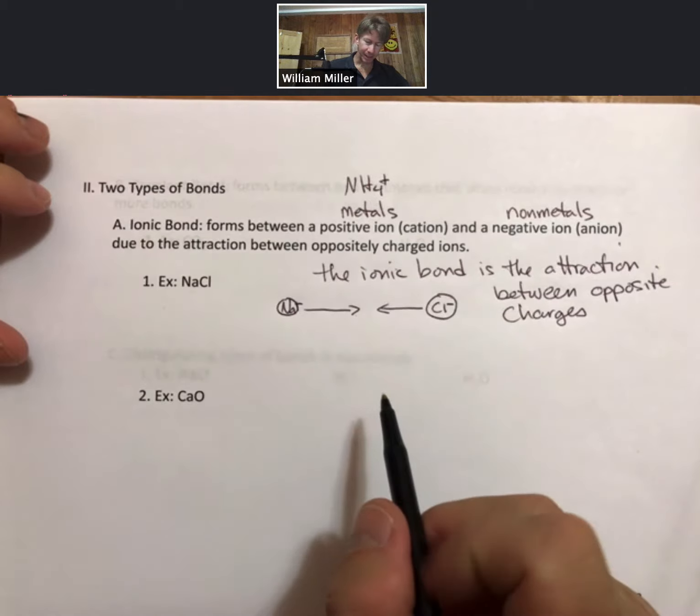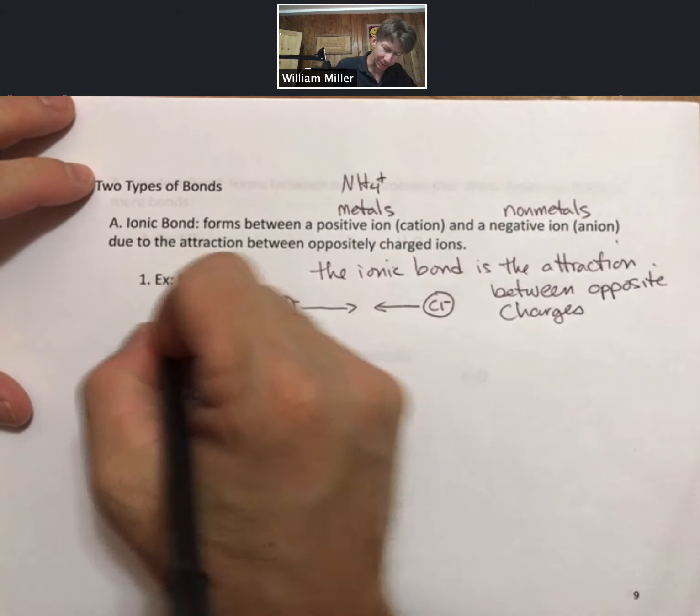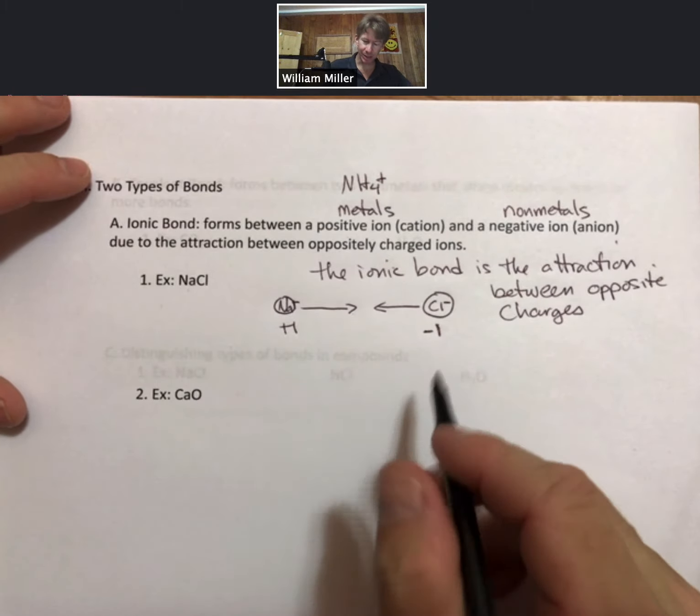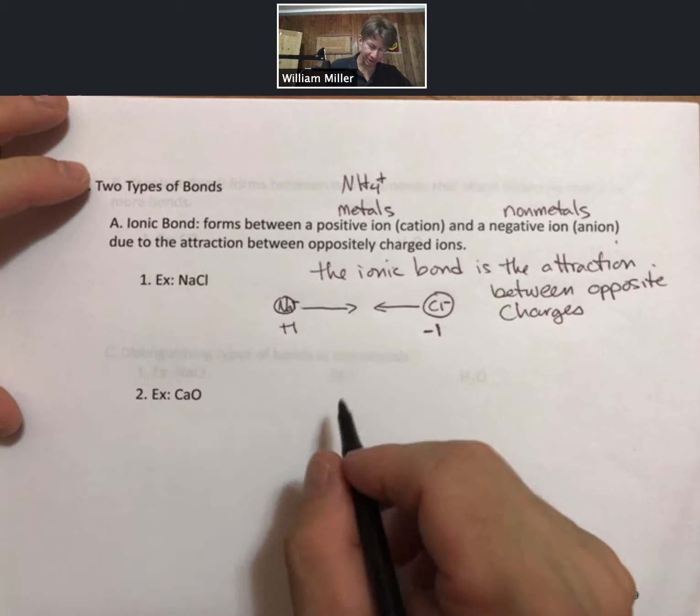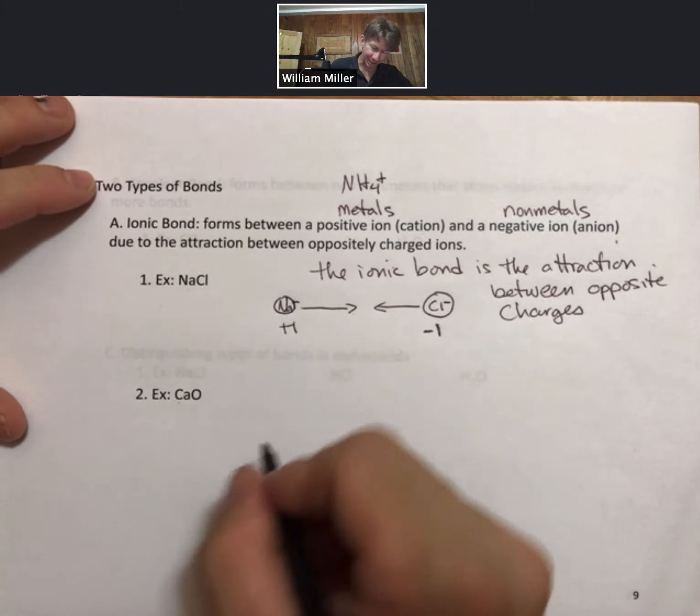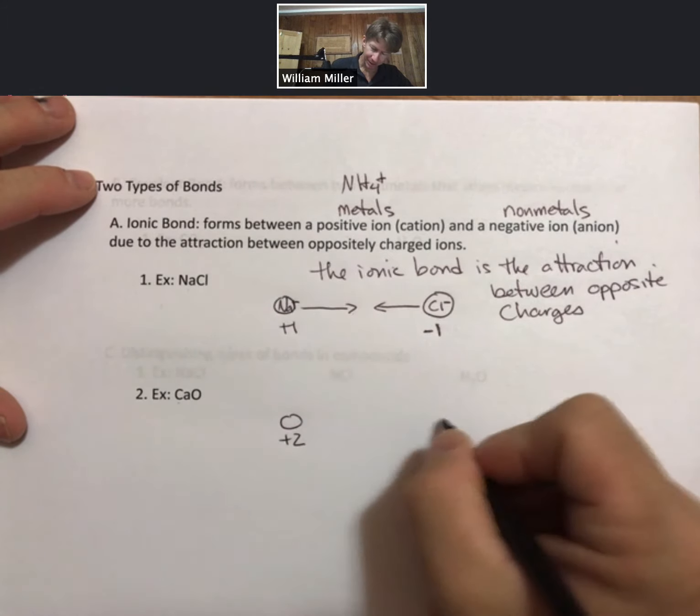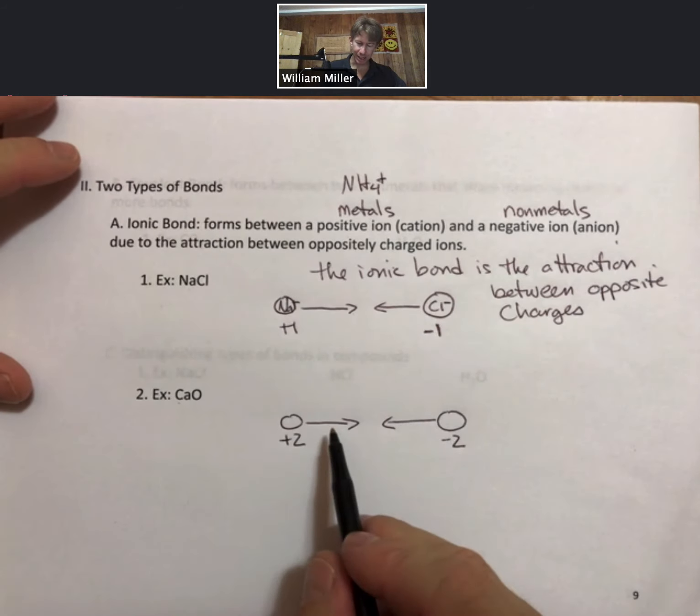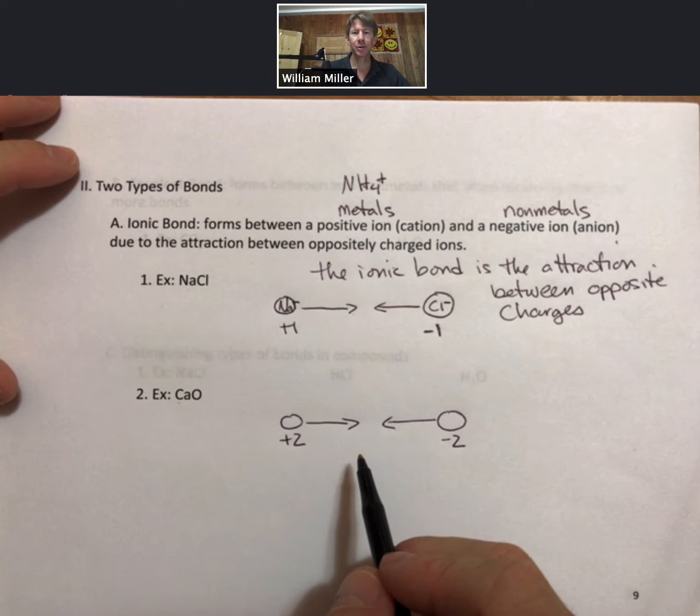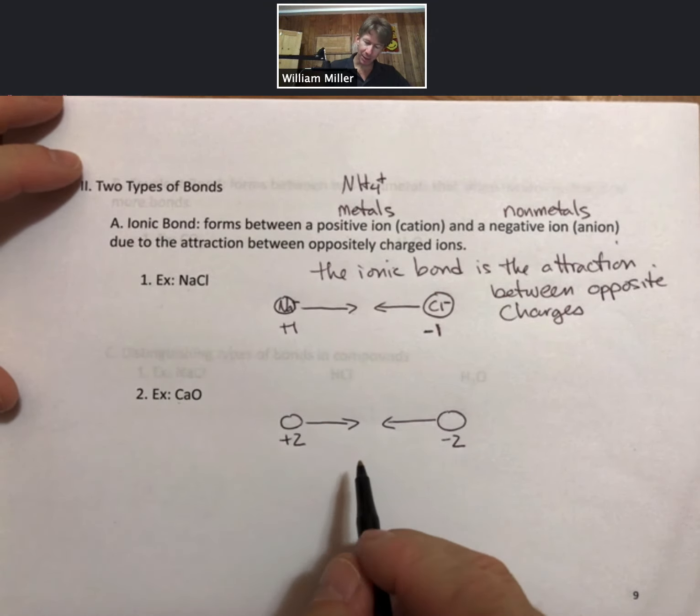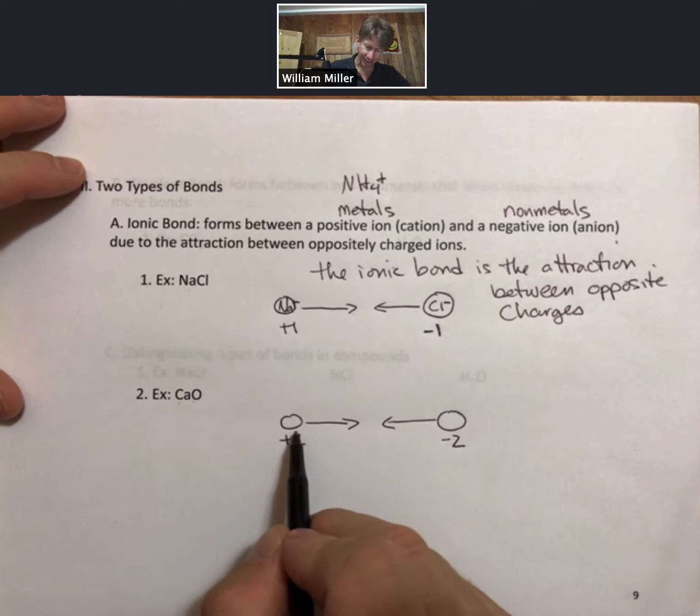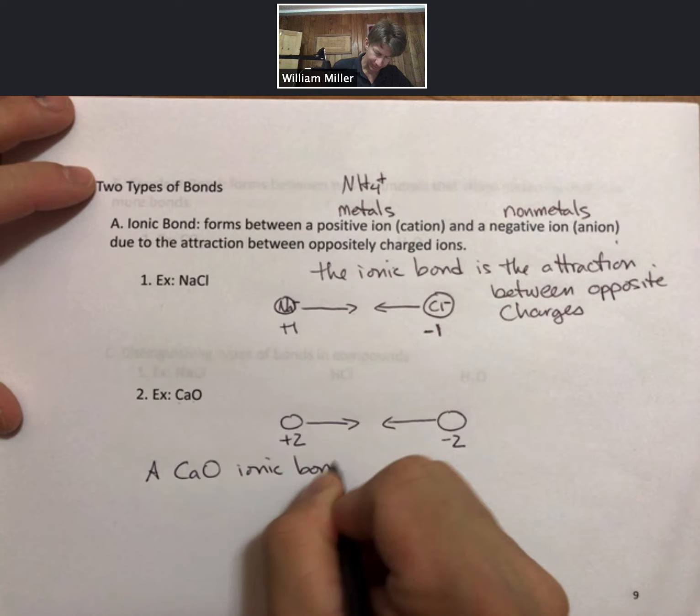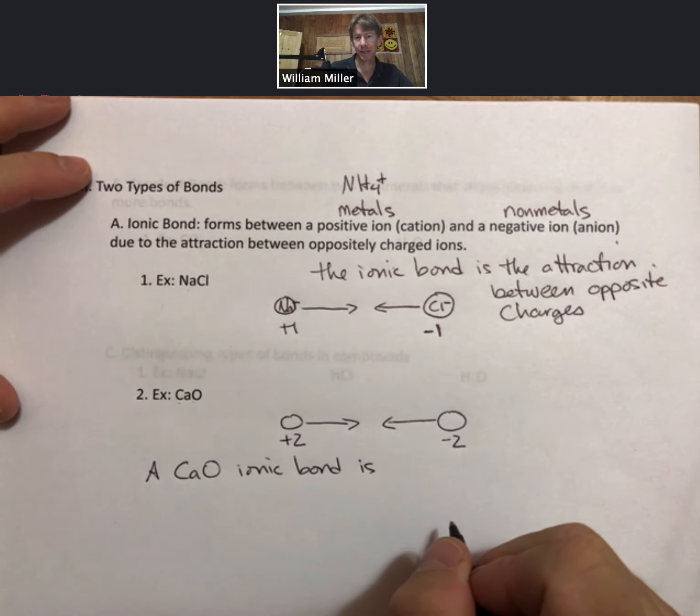If we have sodium and chloride, sodium being a +1 and chlorine or chloride being a -1 ion, we can think about the attraction between these two. Then we can think about the attraction in calcium oxide. Calcium is a +2 ion and here's oxygen which is -2. There is an ionic bond formed. The ionic bond is the attraction between the opposite charges. What I'm going to suggest is that a calcium oxide ionic bond is four times stronger than a sodium chloride ionic bond.